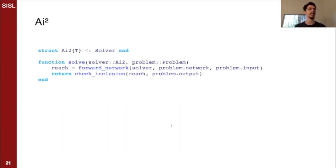So now that we have this, we can define our AI². The solve step of AI² will be fairly trivial. You compute the reachable set using forward_network, and then you check the inclusion of that reachable set. So now all we need is to define forward_linear_set and forward_act_set, which is the activation function. How do we do those two operations?